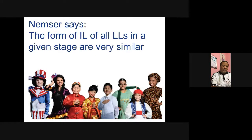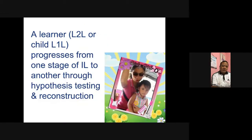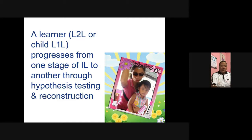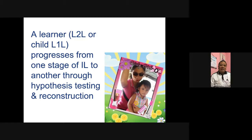According to Nemser, the form of interlanguages of all language learners at a given stage are very similar — this is very similar to what Stephen Krashen said. A learner, whether a second language learner or a child first language learner, progresses from one stage of interlanguage to another through hypothesis testing. When a child has an idea of what the language is, he will give an utterance based on what he thinks the grammar is.